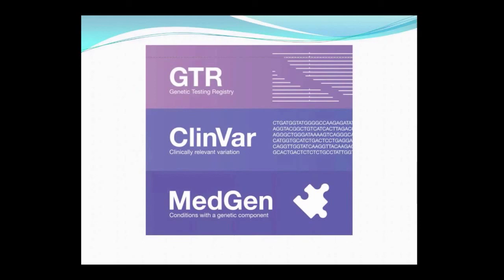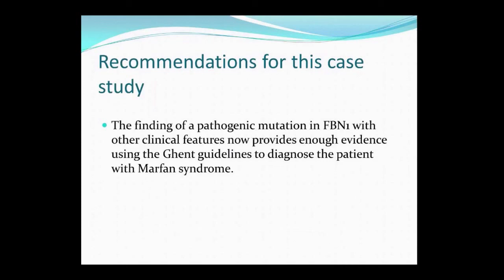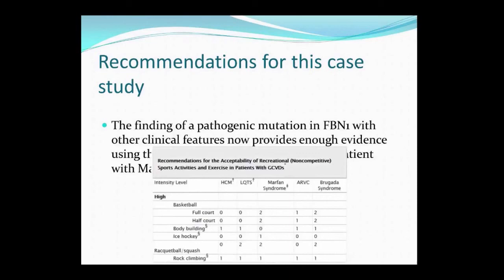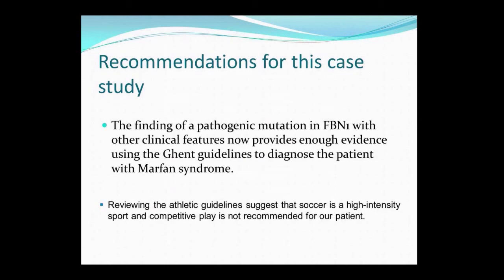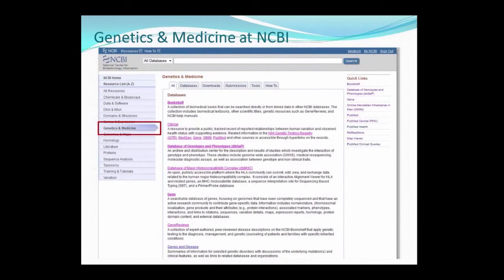Today we've seen several resources to assist us in our case scenario. We used MedGen to get information on the phenotype and differential diagnosis, as well as to locate the Ghent criteria for Marfan syndrome. We used GTR to find appropriate tests and get additional information that can be provided to consumers. We also used ClinVar to research variant pathogenicity and to find other views of pathogenicity and any evidence to support claims. The finding of a pathogenic mutation in FBN1, combined with the other clinical features, now provides enough evidence using the Ghent guidelines to fulfill a diagnosis of Marfan syndrome. The exercise recommendations show that the most high-intensity competitive sports are not recommended for individuals with Marfan syndrome. Although this news is likely crushing to this child, you know you've played a part in saving his life.